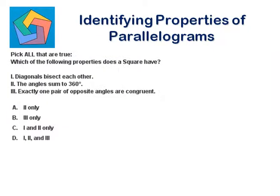Next problem. Pick all that are true: which of the following properties does a square have? First, diagonals bisect each other. Here is a square with vertices A, B, C, D.